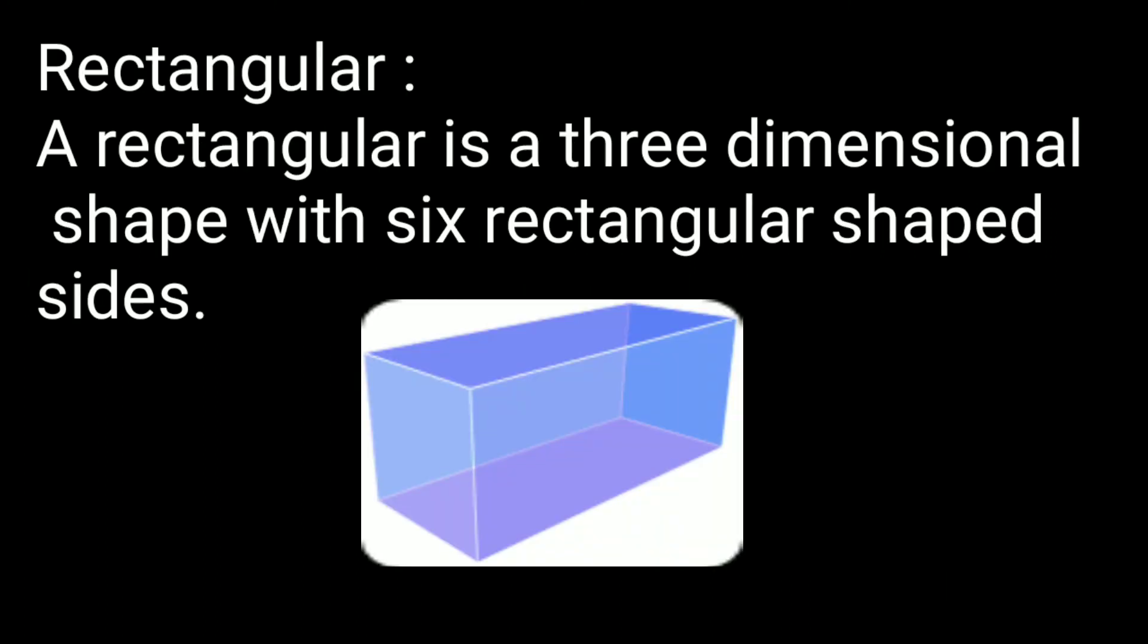Rectangular prism: A rectangular prism is a three-dimensional shape with six rectangular-shaped sides.